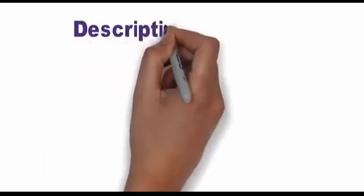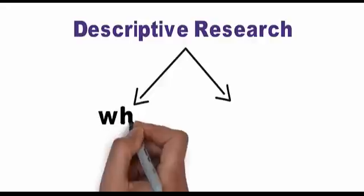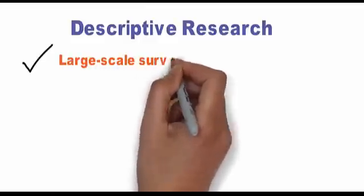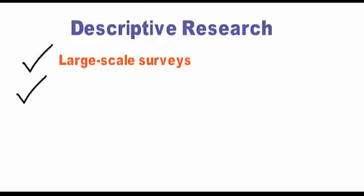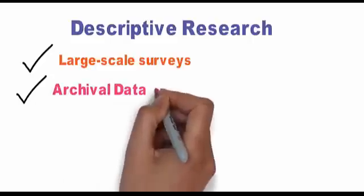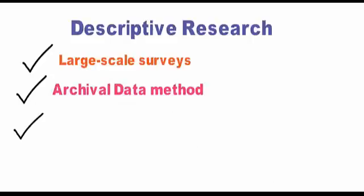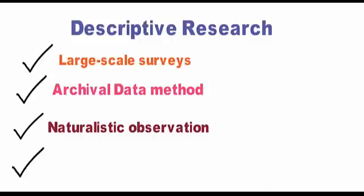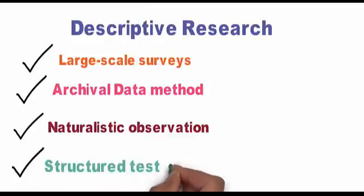Descriptive research: as the name implies, this is an in-depth sort of research design that answers what and how. Descriptive research aims to accurately and systematically describe a population, situation, or phenomenon. It can use a wide variety of research methods to investigate one or more variables. It can answer what, where, when, and how questions, but not why questions.